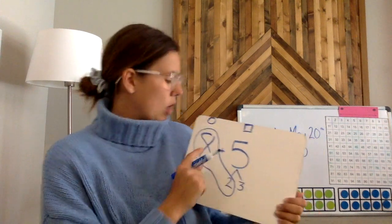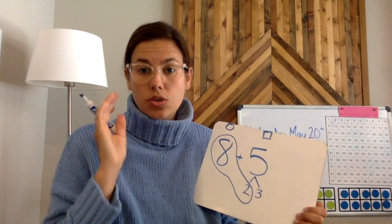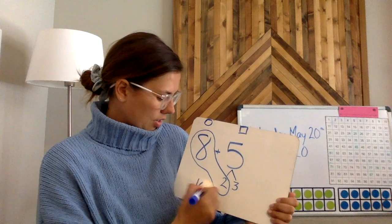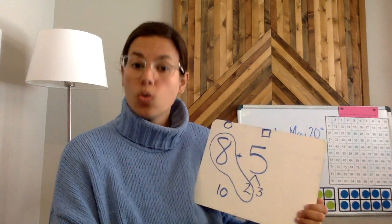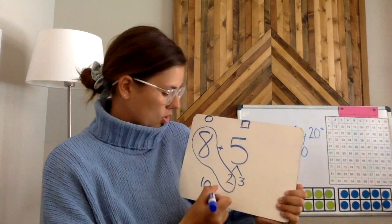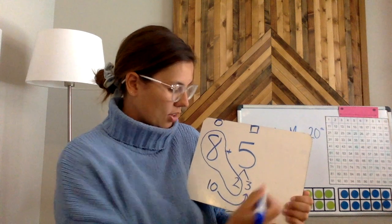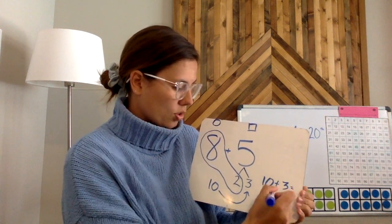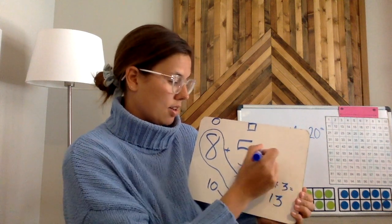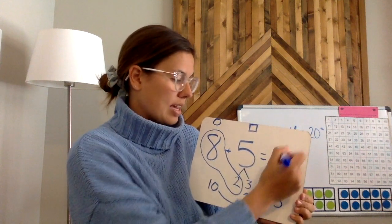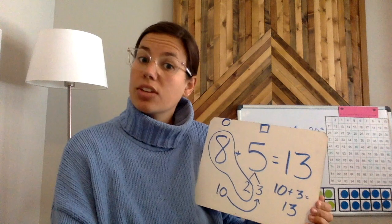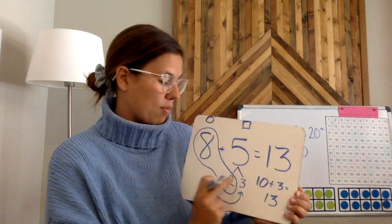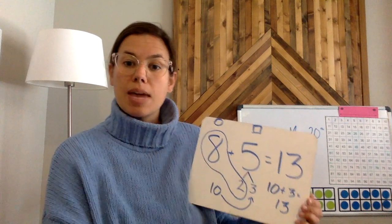So all of a sudden, we've gone from 8 + 5, which is a little bit tricky to do in our head, to 10 + 3, which is much easier to do in our head. So the 10, we add it to the three, 10 + 3 = 13. So 8 + 5 = 13. But that's just a different way to do it. If you break down the number five into easier numbers so that you can easily make a number 10.